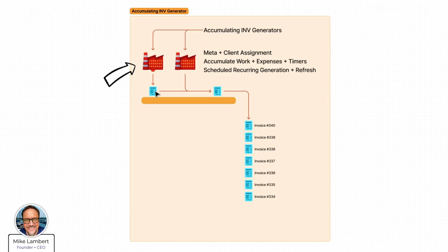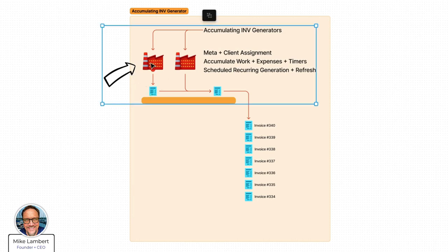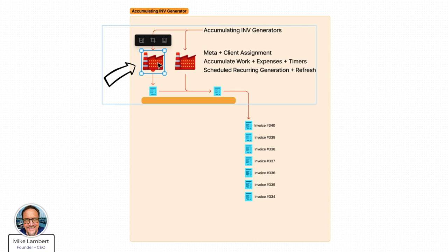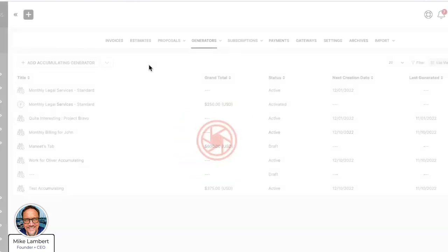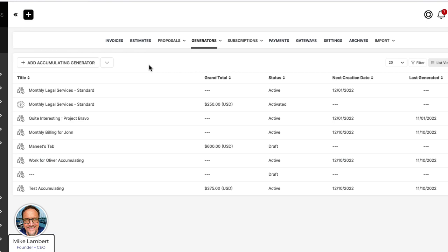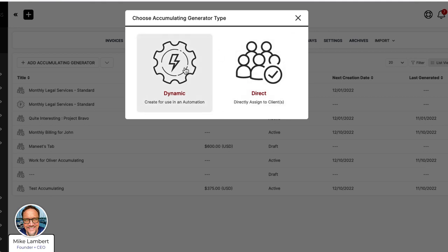I hope everybody sees how that works. This generator here is directly assigned to Harrison. We have covered on-demand, recurring, and accumulating direct invoices. Let's go back and talk about a slightly more abstract but also amazing concept: dynamic versus direct generators, and how they work in automation.